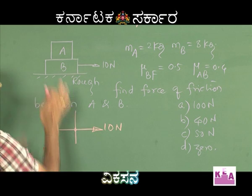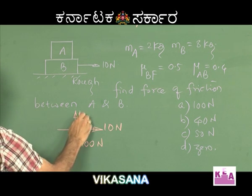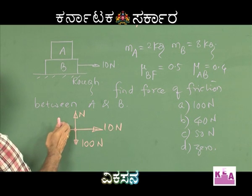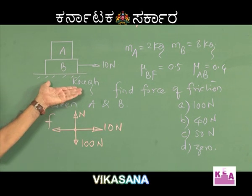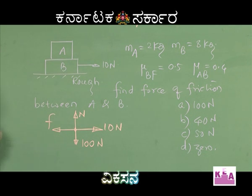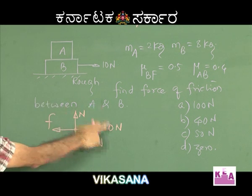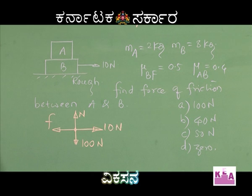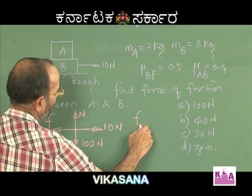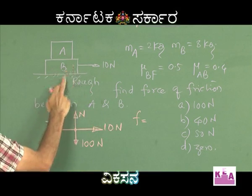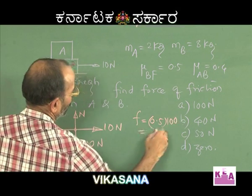Making a combined free body diagram: the applied force is 10 newtons on a system of mass 10 kg, giving a normal reaction of 100 newtons from the ground. Due to the tendency of the system to move right, friction acts to the left between the floor and block B. The maximum static friction between B and the ground is mu into N, which is 0.5 times 100 newtons, giving 50 newtons.